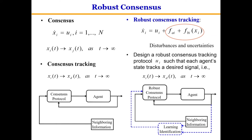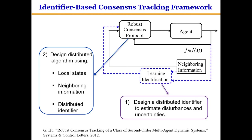We developed an identifier-based robust consensus tracking framework to solve this problem. Step one is to design a learning identification strategy — a distributed identifier — to estimate the disturbances and uncertainties. In step two, the local states, neighboring information, and identified information are leveraged to develop a robust consensus tracking protocol. The challenge of this design is to analyze and ensure closed-loop system stability.